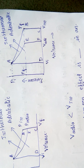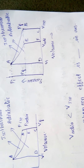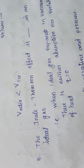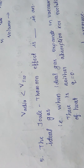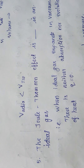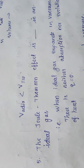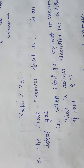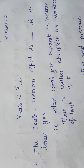The next question is the fifth: the Joule-Thomson effect in an ideal gas. In the Joule-Thomson effect, q = 0. When an ideal gas expands into a vacuum, there is neither absorption nor evolution of heat, so q = 0. Exam questions are asked based on this concept.